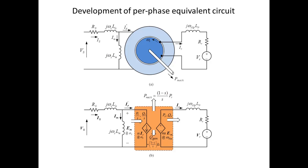Notice that in the case of transformers, the primary side power should be exactly equal to the secondary side power, whereas in this case they are drastically different. As an example, if S equals 0.1, that will make the mechanical power — the difference between stator power and rotor power — equal to (1 − 0.1)/0.1 = 9. So if P_R is one per unit, then the stator power is nine per unit, a very big difference, and that is the mechanical power.